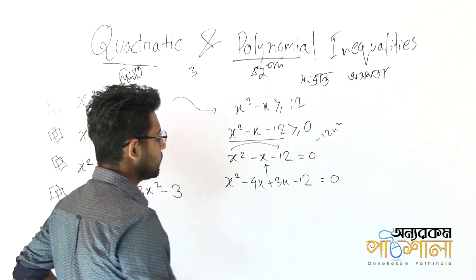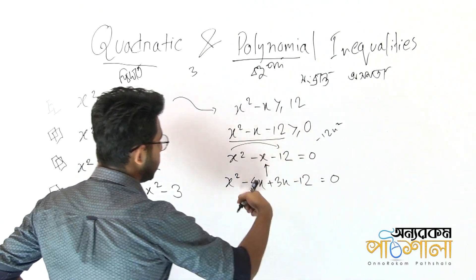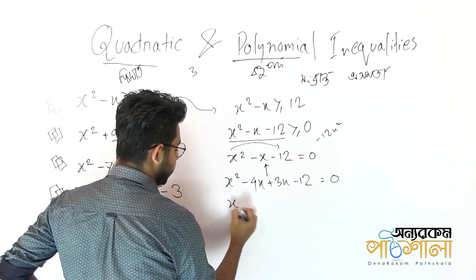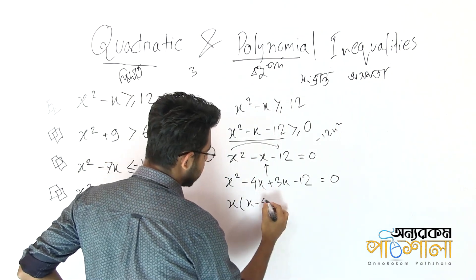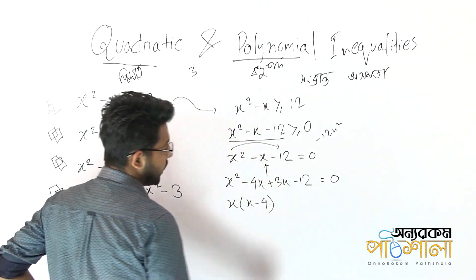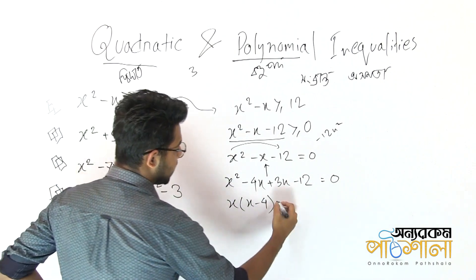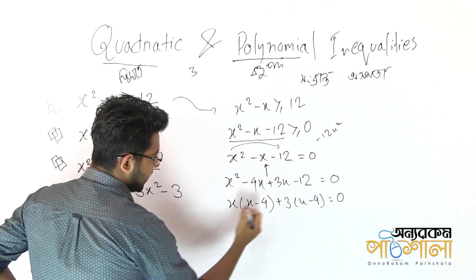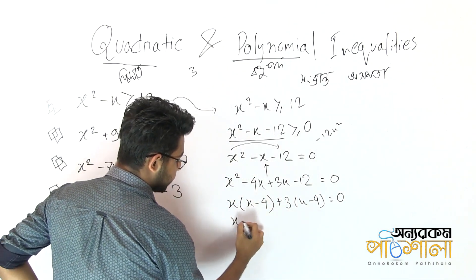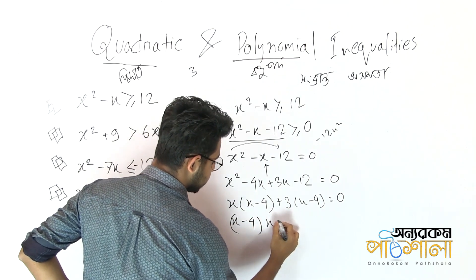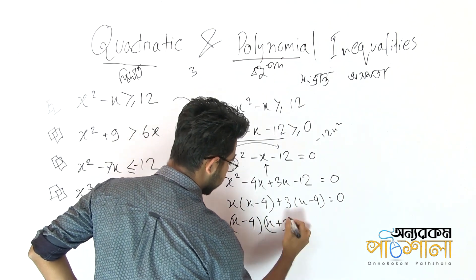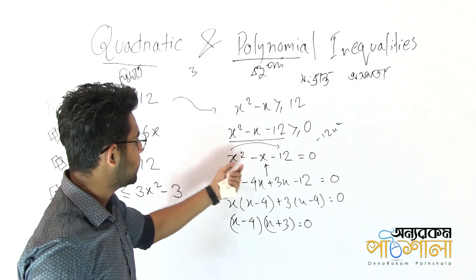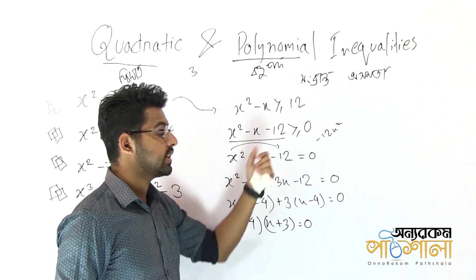It's a very simple process. Let's look at what is common. x minus 4 is common in both groups. So we factor: (x - 4)(x + 3) = 0. This gives us x² - x - 12 factored.